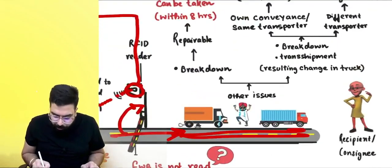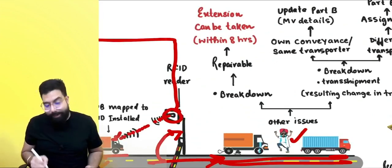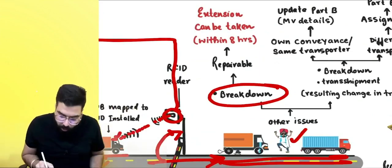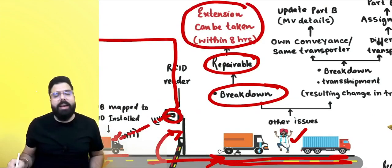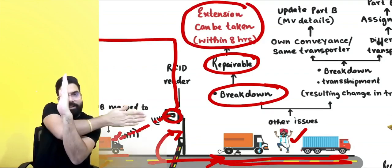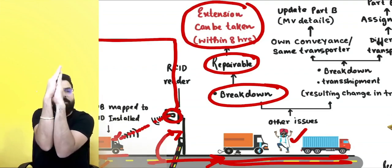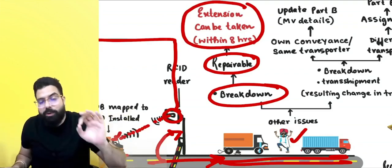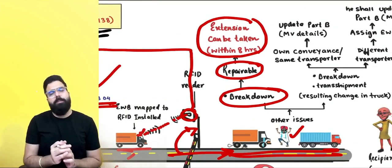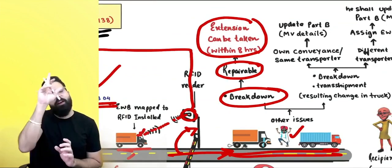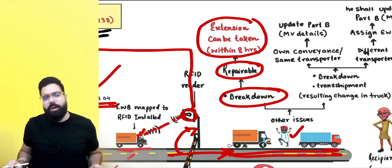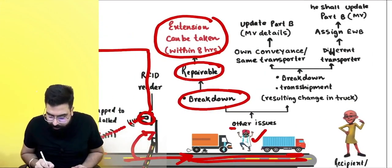If there is a breakdown on the way and the e-way bill is about to expire at midnight, if the breakdown is repairable you can apply for an extension within eight hours before or eight hours after the expiry time. So if expiry is at midnight, you can apply from 4 PM that evening until 8 AM the next morning.